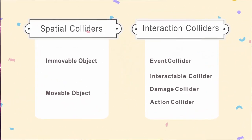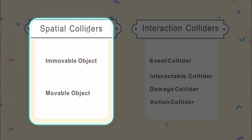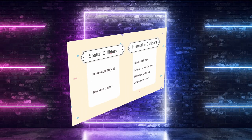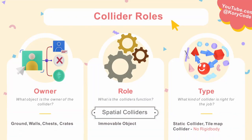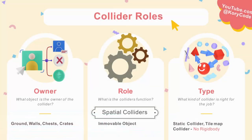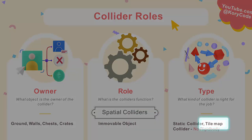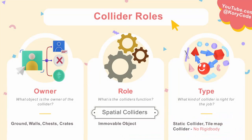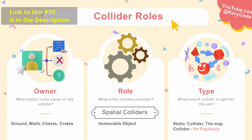There are two main groups of colliders in my game: spatial colliders and interaction colliders. Spatial colliders are either immovable objects, typically level elements like the ground, walls, chests, and crates. Their type are simple static colliders without any rigid body attached. In my case I used a tile map collider for the level, and simple static colliders for the chests and burrows.